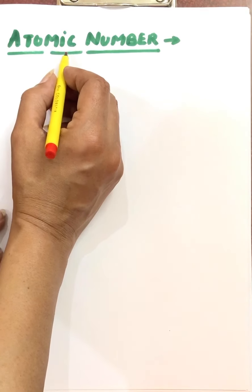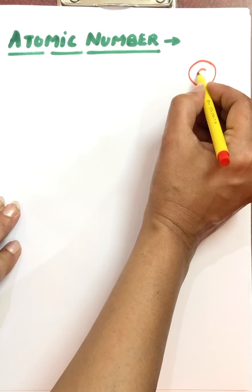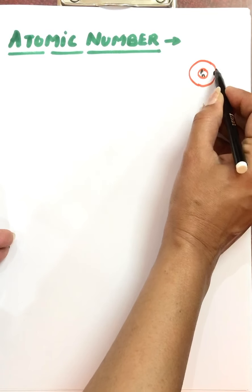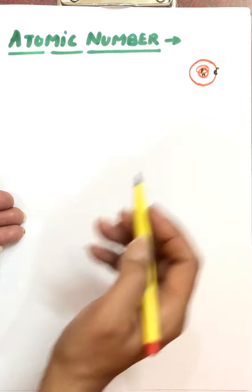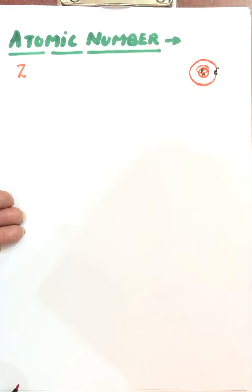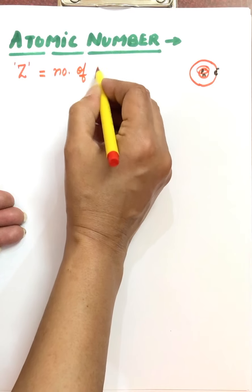Today we are doing electromagnetic wave theory, but before that we are covering atomic number, mass number, isotopes and isobars. First is atomic number. If this is an atom, in the center we have a nucleus. In the nucleus there are protons and neutrons, and outside the nucleus there are electrons moving in shells. Atomic number is equal to the number of protons in an atom, and it is denoted by the symbol Z.